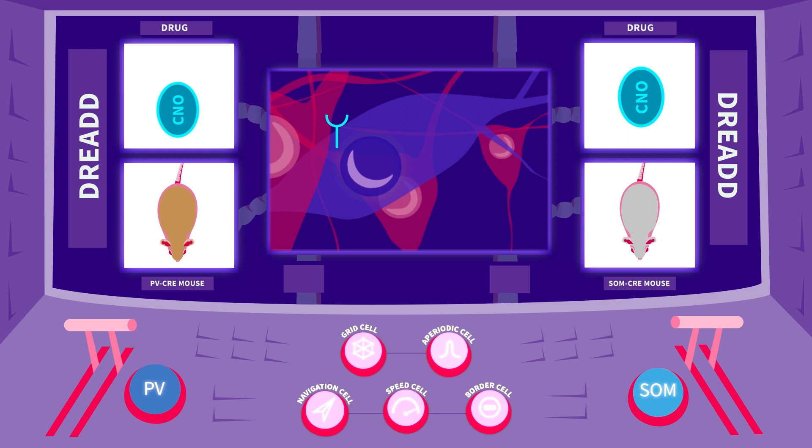When the drug CNO is introduced into the body, it will bind to the DREADD receptors only, causing selective silencing of either PV or SOM cells for a period of hours.